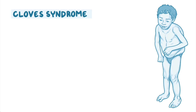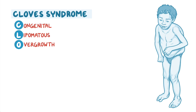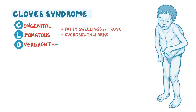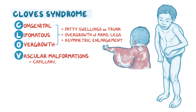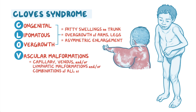CLOVES syndrome involves congenital lipomatous overgrowth, resulting in fatty swellings on the trunk and/or overgrowth of arms and/or legs that leads to asymmetric enlargement, vascular malformations including capillary, venous, and/or lymphatic malformations, and/or combinations of all of those.